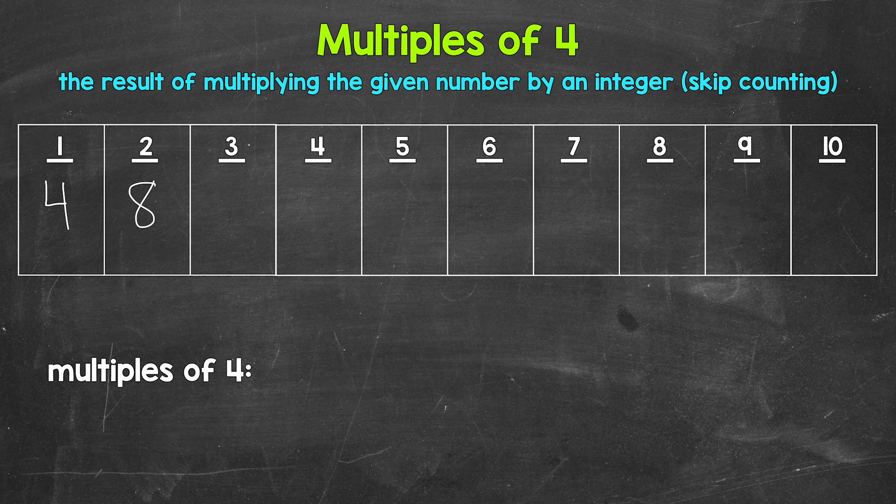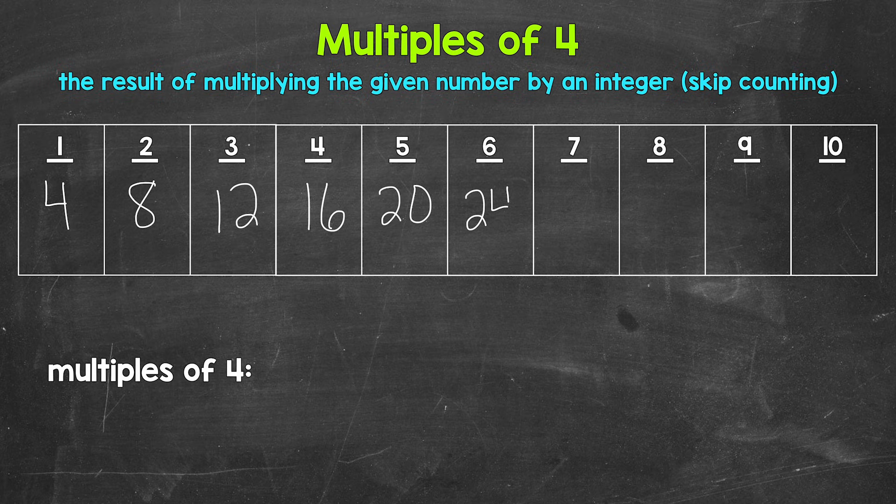Eight is the second multiple of four. Then we have three times four, that's 12. Four times four is 16. Five times four is 20.